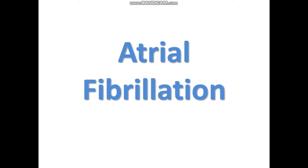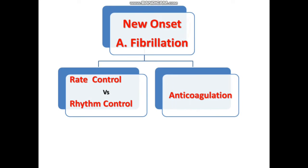Today we are going to study atrial fibrillation, which is the most commonly diagnosed cardiac arrhythmia that results from structural or electrophysiological irregularities within the atrial tissue. We are going to study its management. The management of atrial fibrillation has two aspects: whenever there is a new onset atrial fibrillation, we either do rate control or rhythm control. Another strategy that we have to employ is anticoagulation.